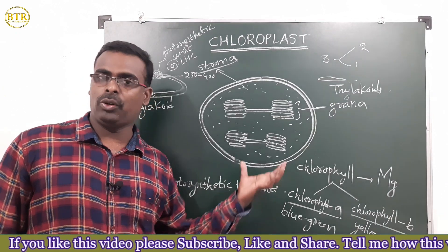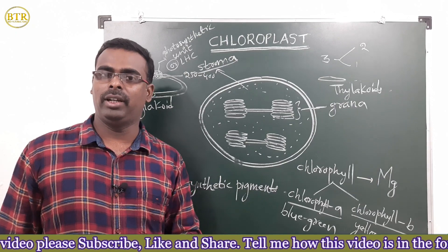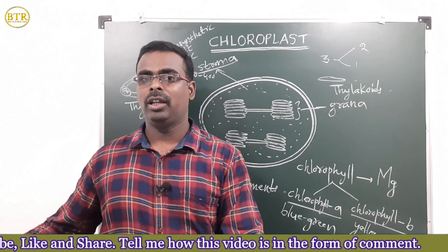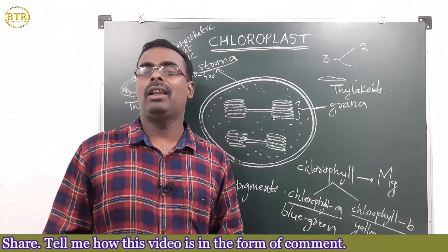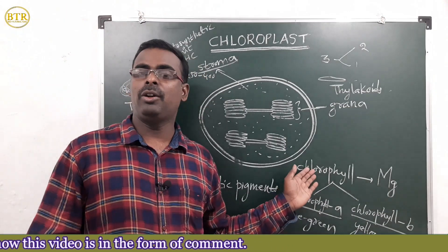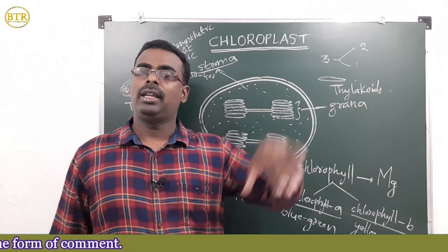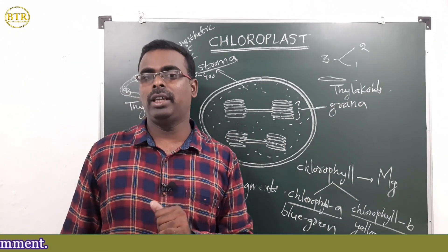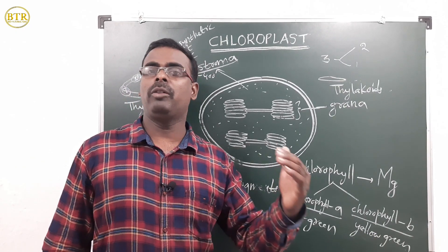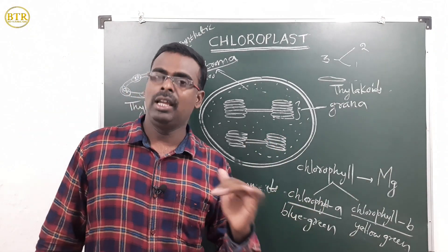There are three types of photosynthetic pigments: chlorophyll, carotenoids, and phycobilins. Chlorophyll structure is similar to hemoglobin. Chlorophyll is a green-colored pigment containing magnesium; hemoglobin is a red-colored pigment containing iron. Hemoglobin transports oxygen in our body.